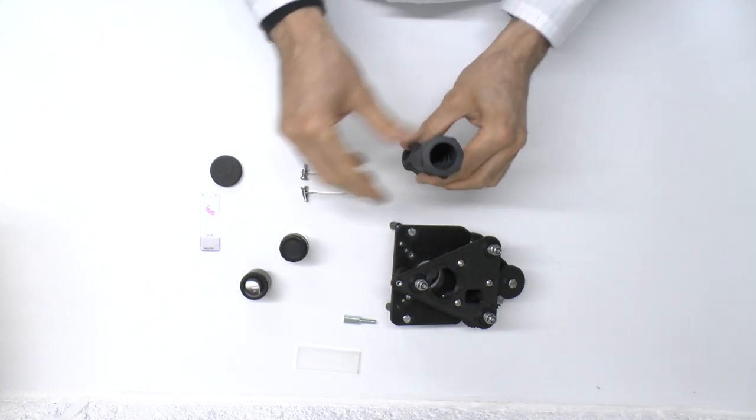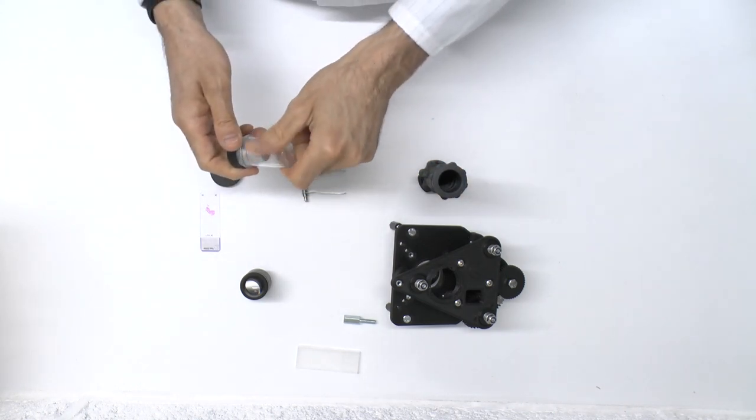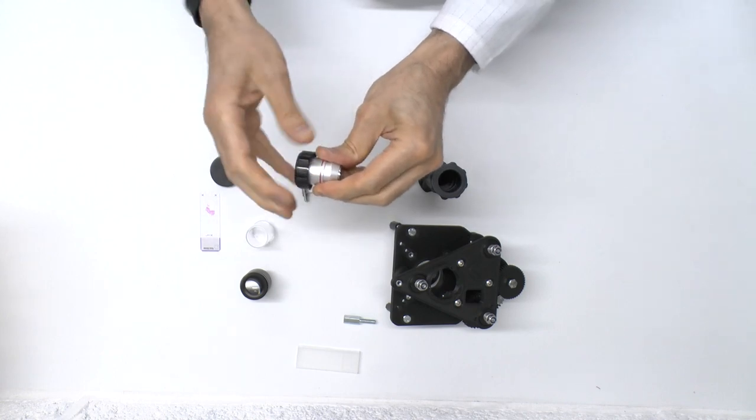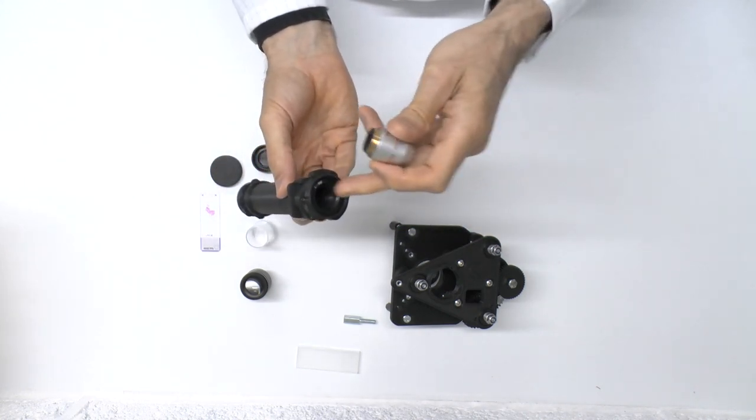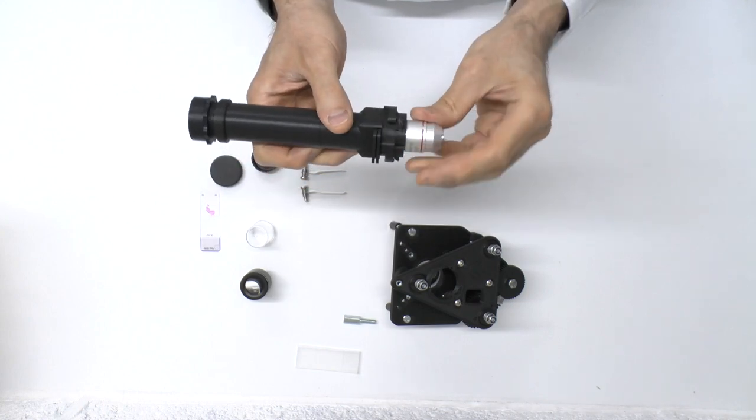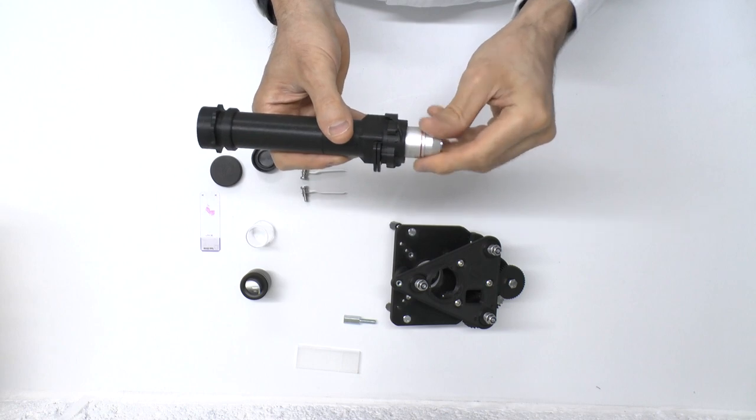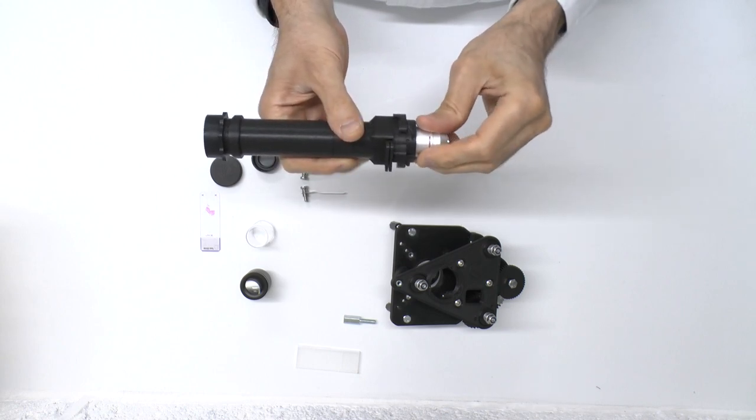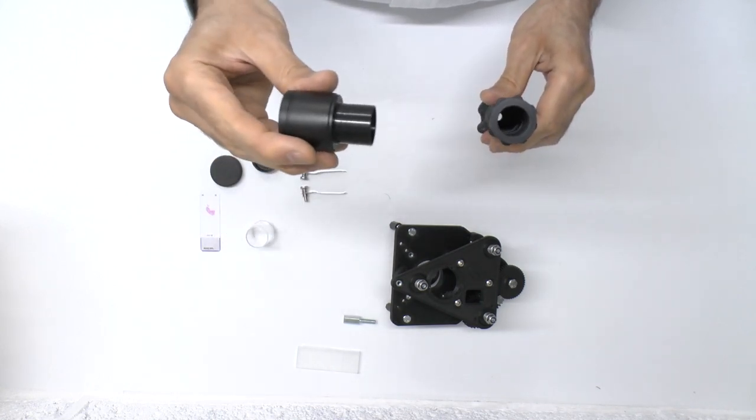The only thing that's missing are the lenses. So we'll add those now. Take the objective out of its holder. That threads into the RMS thread here. Be careful not to cross the thread. There we are.